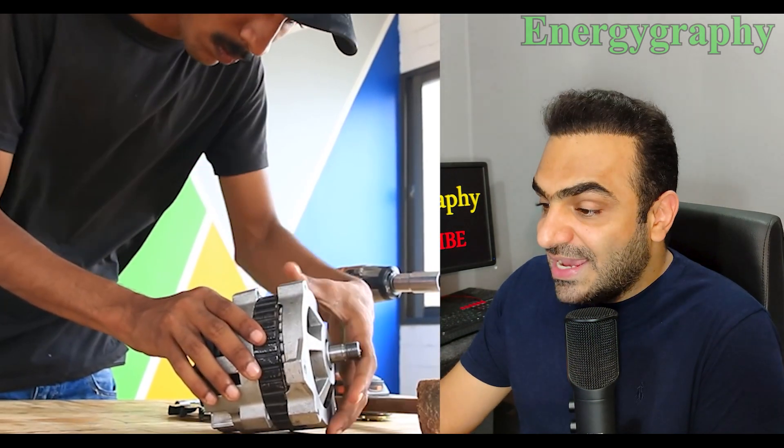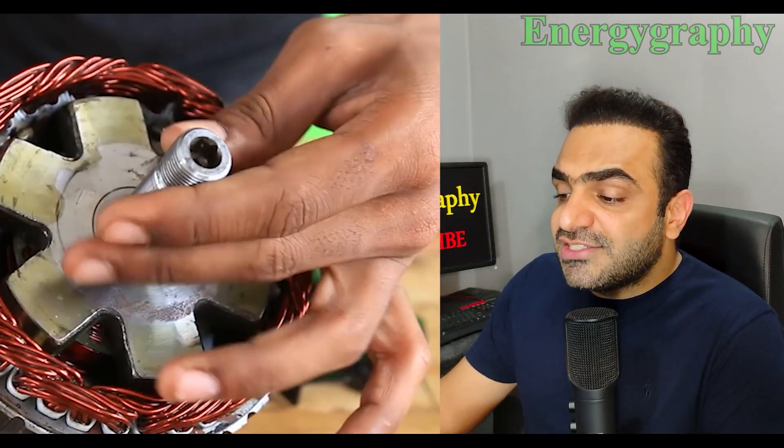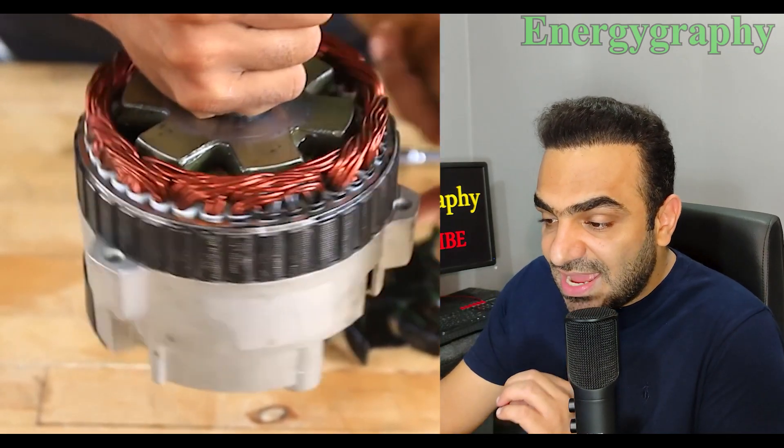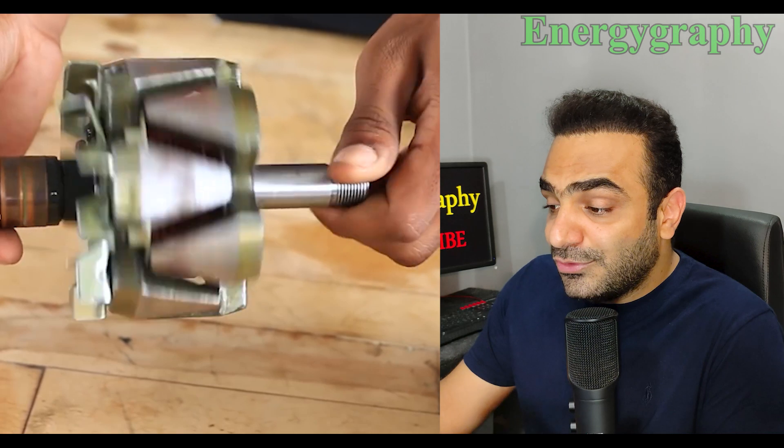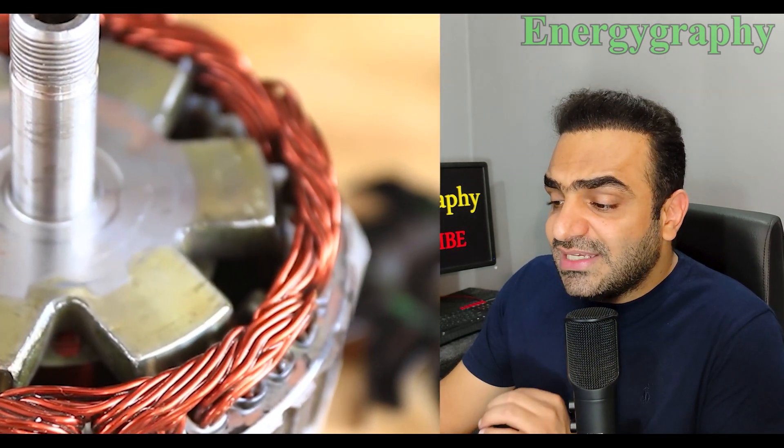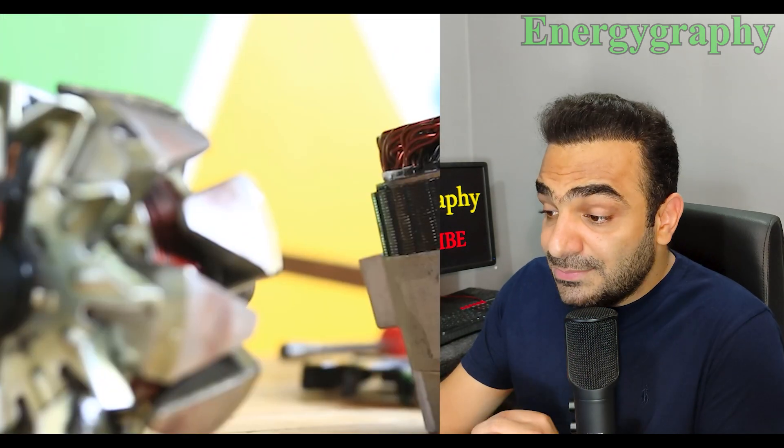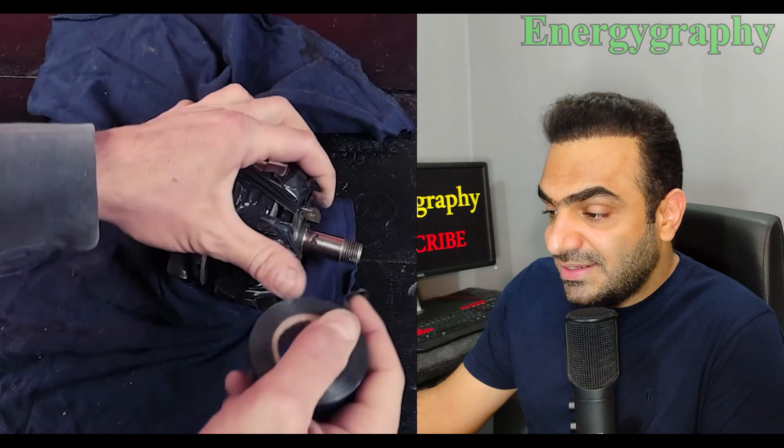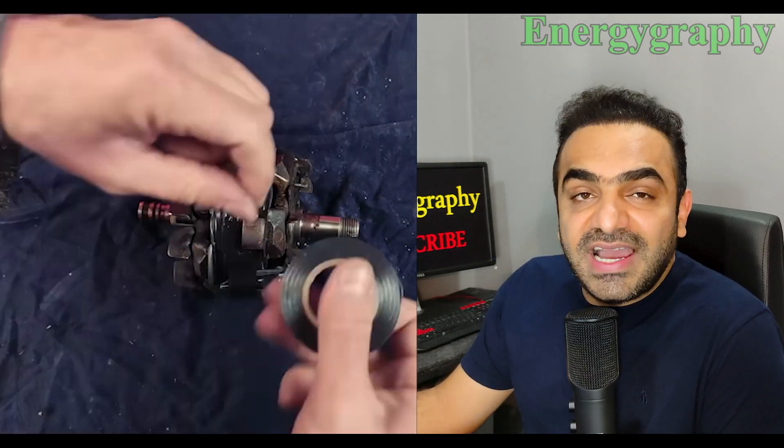It's important to note that permanent magnets are not used in this type of alternator because they lower the efficiency. Instead of permanent magnets, a rotor with an electromagnet is used because it can have higher efficiency in a smaller volume. By placing permanent magnets, this person lowered the efficiency of the alternator even below the factory state.